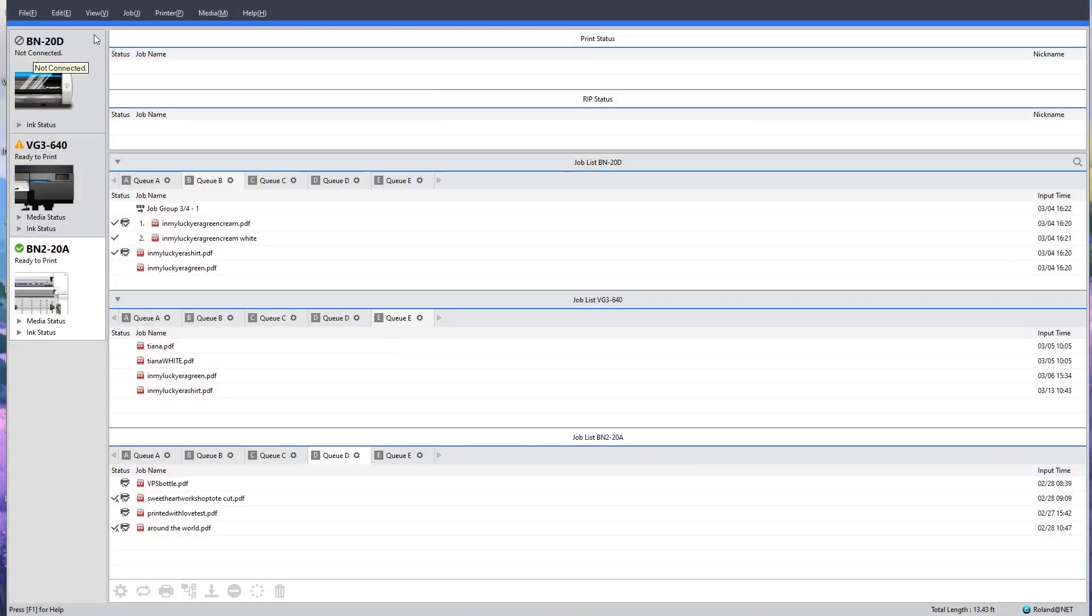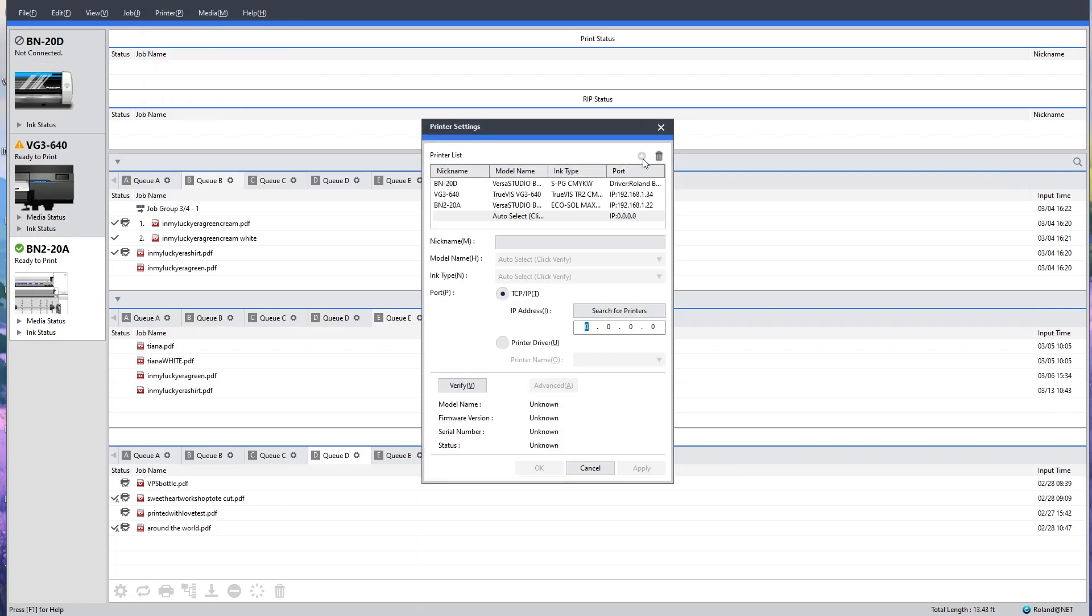To connect my printer, I'm going to go to printer, printer settings, and add a new printer. Now since I connected my printer to my computer via a USB connected to a LAN, I'm going to search for printers.